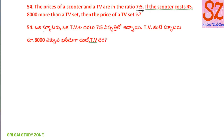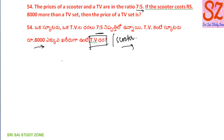A scooter costs 8000 more than a TV set. The scooter and TV are in the ratio of 7 is to 5. This is the scooter. This is the TV. The value of TV — V will show the short value of TV.